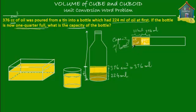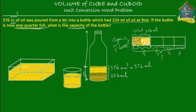Now what we have to find out is how much is the capacity. The capacity, if divided into four equal parts, these two portions together — 224 ml and 376 ml — form one part, because the bottle is one quarter full. One quarter full means one fourth. So this is one fourth, this is one fourth, this is one fourth, and this is one fourth. Four one-fourths make one whole.